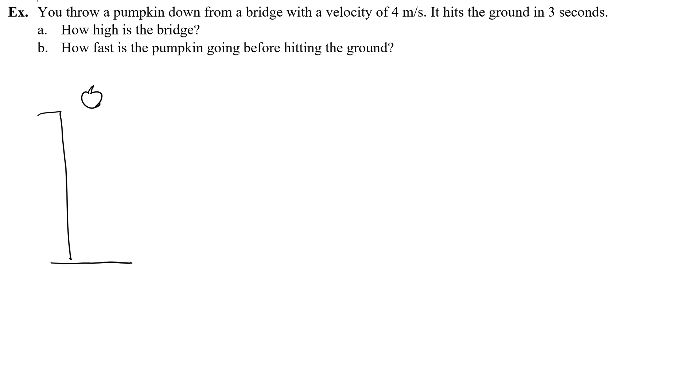So here's the pumpkin. Now instead of dropping this or throwing it up, you throw it down, so it starts with an initial velocity down, which would be negative four, negative four meters per second. And that negative is really, really important, so let's make sure you can see it. So you throw it down with a negative four meters per second velocity.